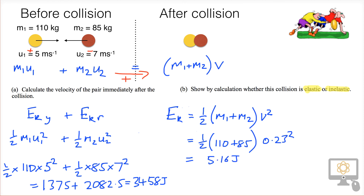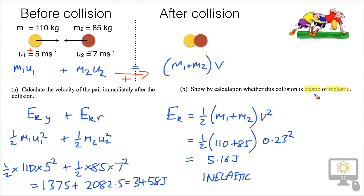That is an absolutely dramatic difference. Kinetic energy has, without a shadow of a doubt, been lost — as heat, and for two rugby players, probably an awful lot of sound as well. So this is an inelastic collision. I hope you found that helpful in understanding how to use conservation of momentum to find the velocity after a collision, and how to determine whether a collision is elastic or inelastic.